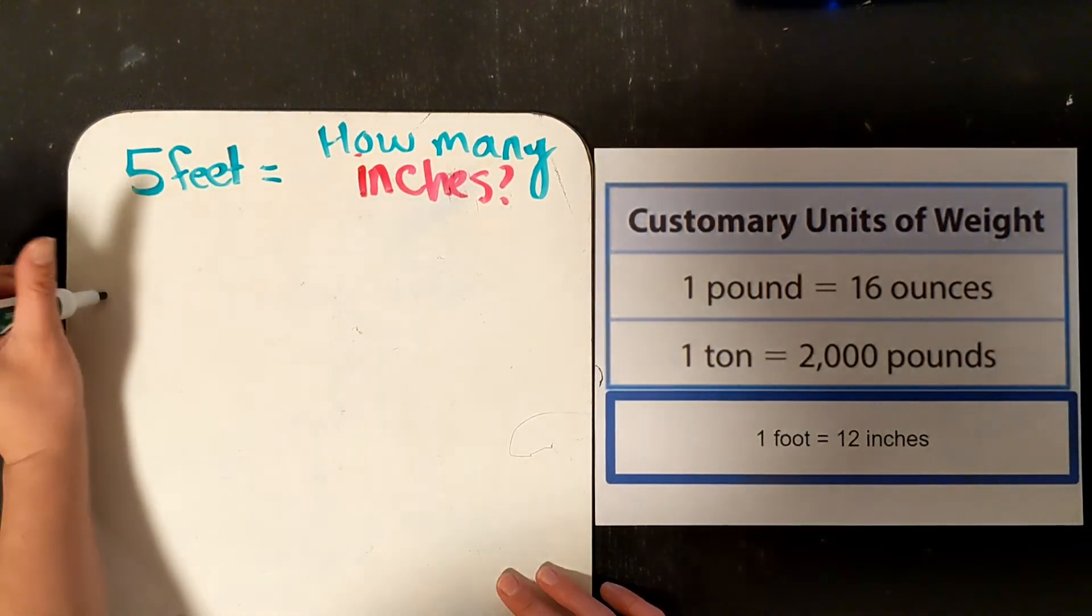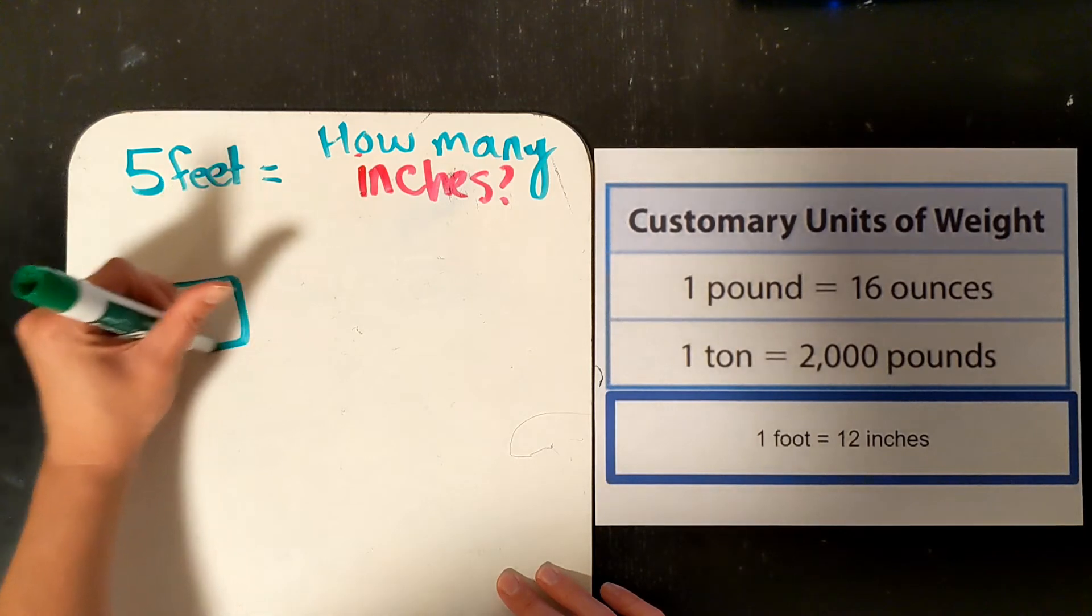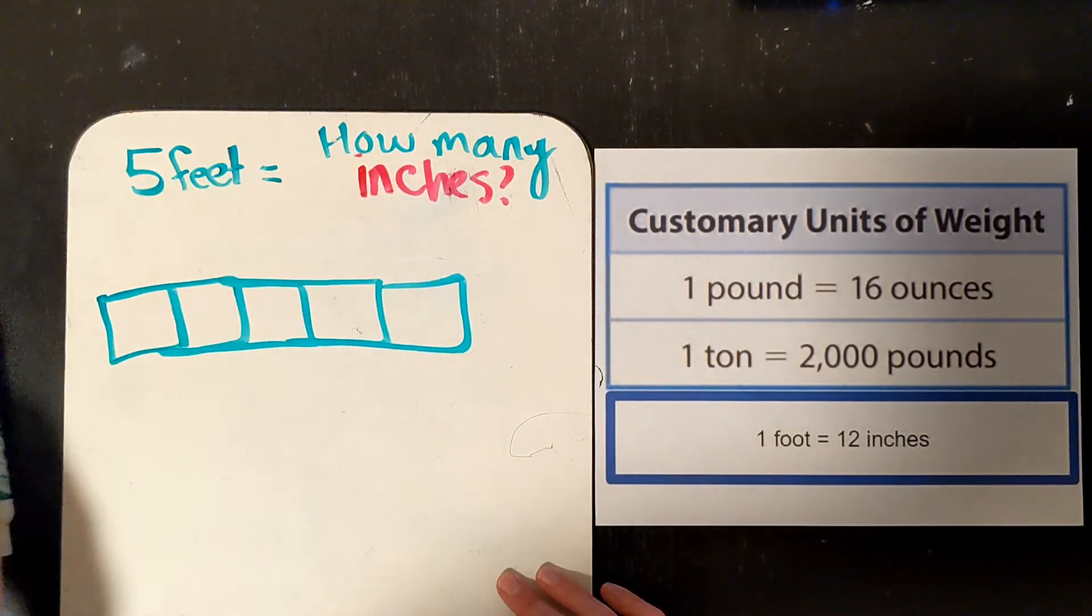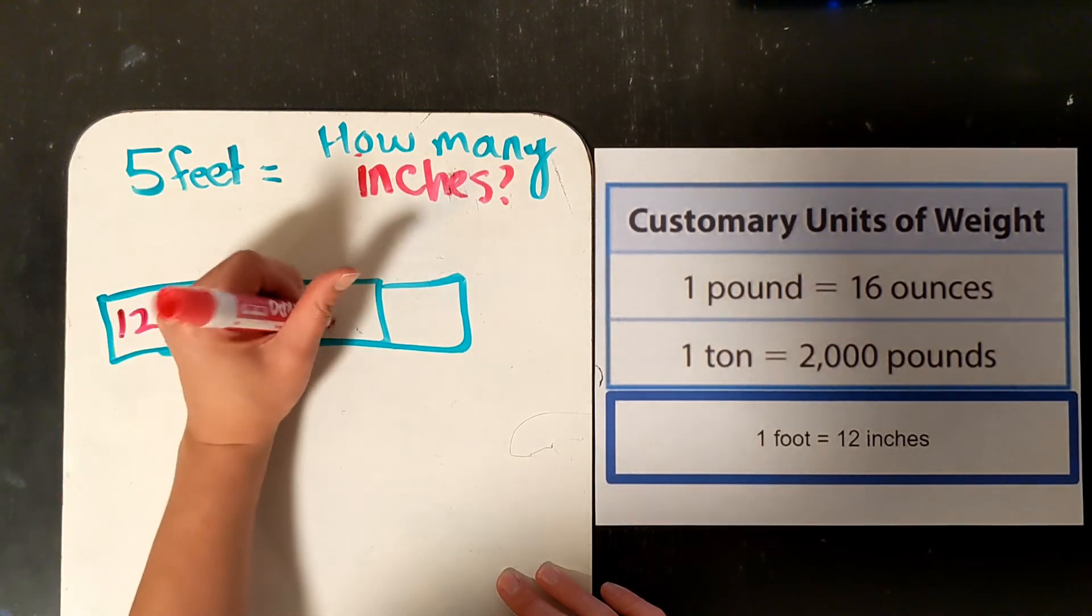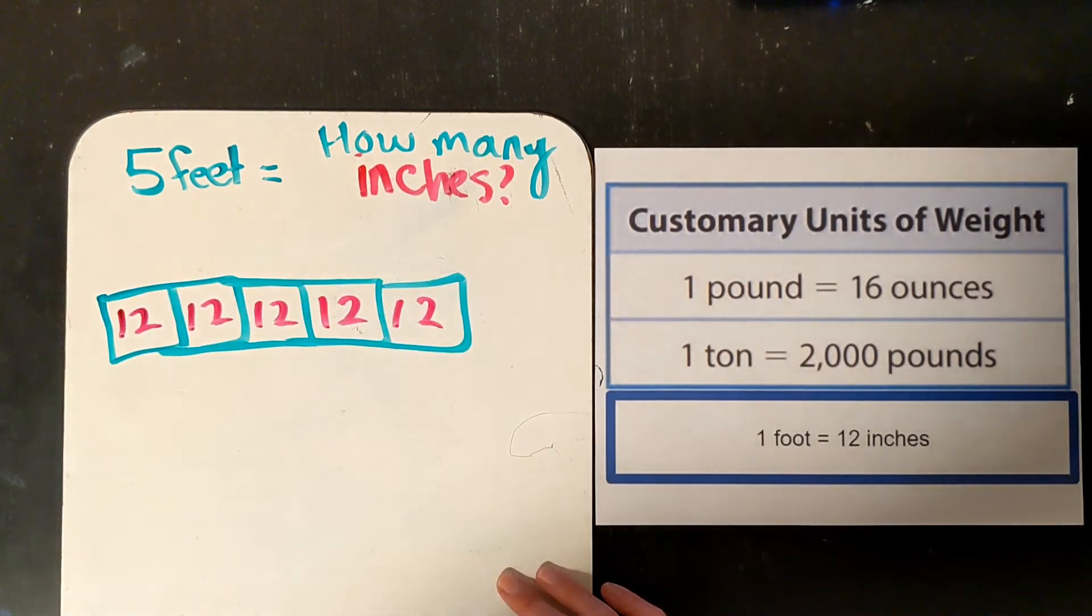So, for each ruler or each foot we have, 1, 2, 3, 4, 5 is 12 inches. Try this one on your own. Pause the video and then come back, please.